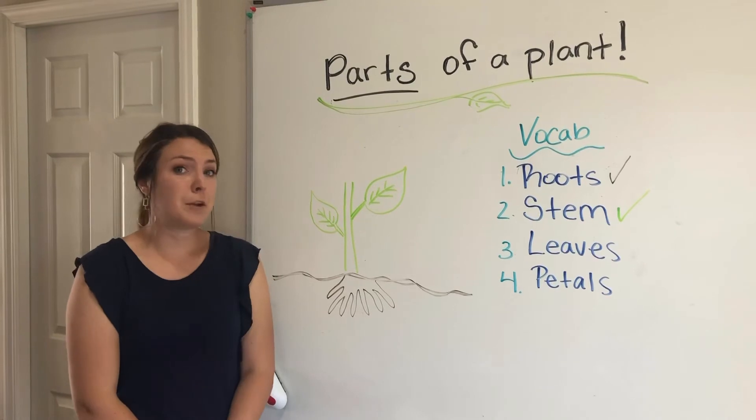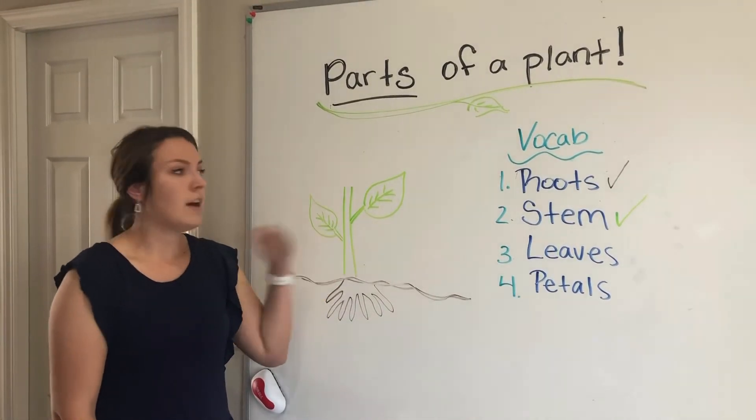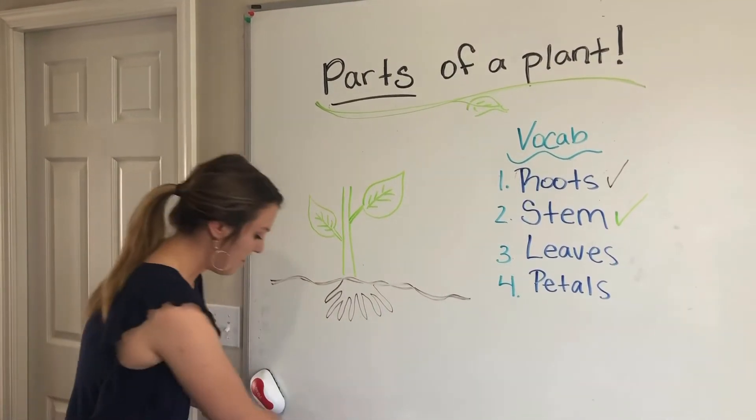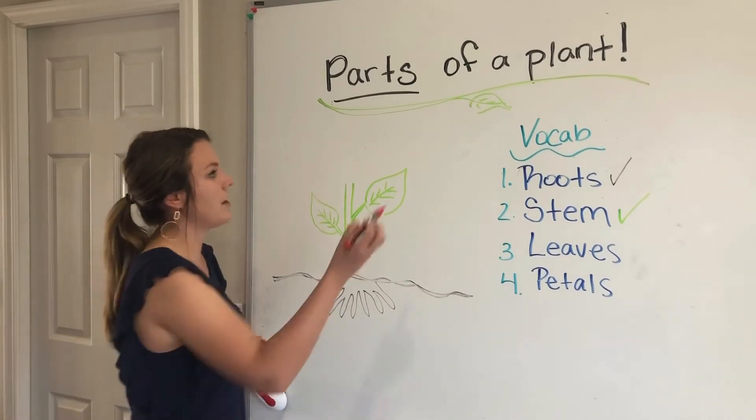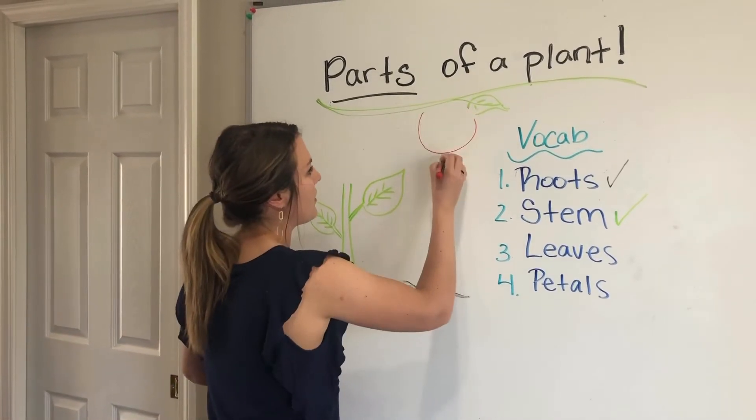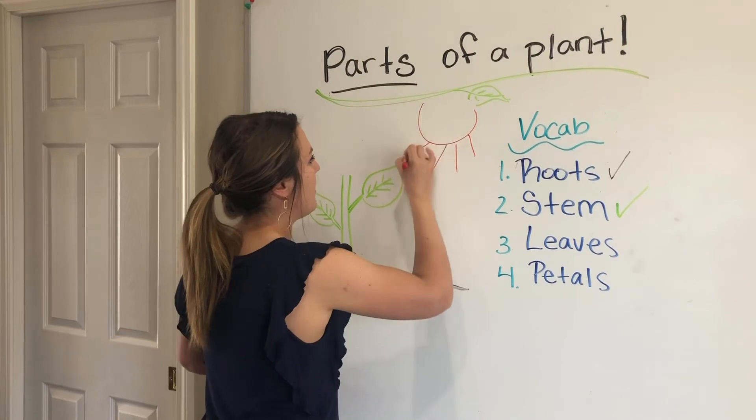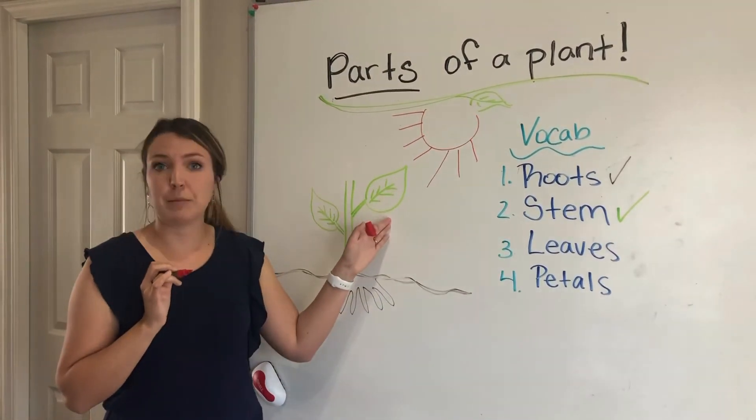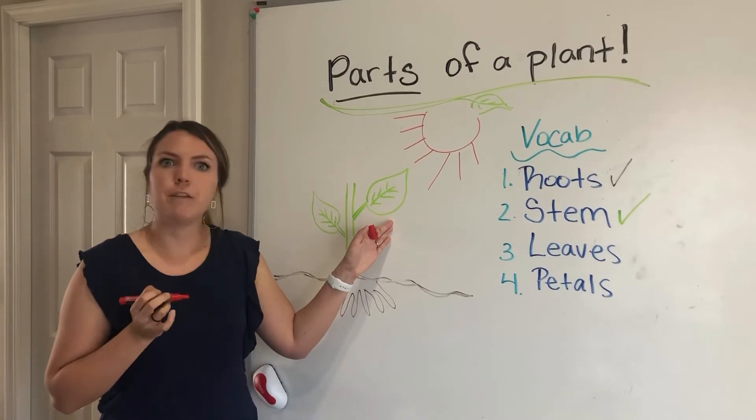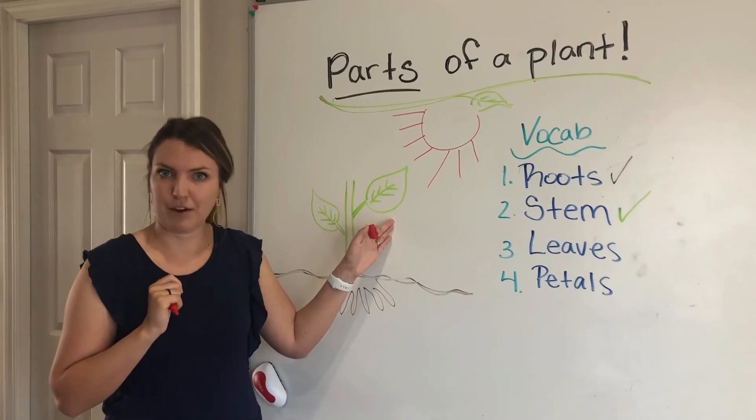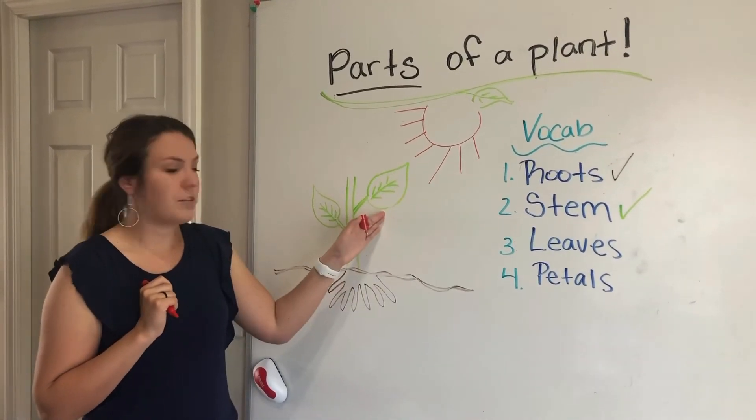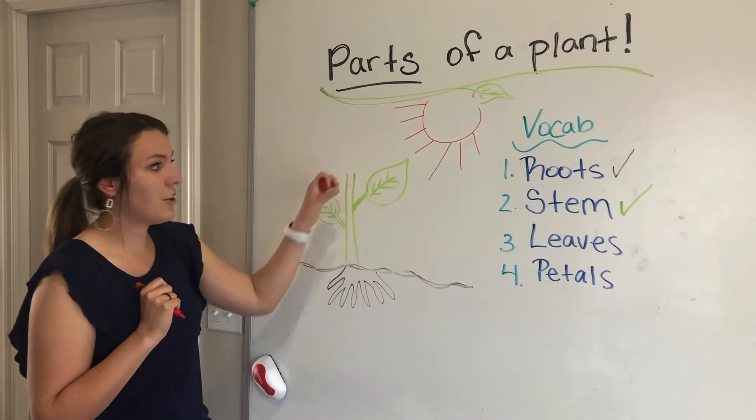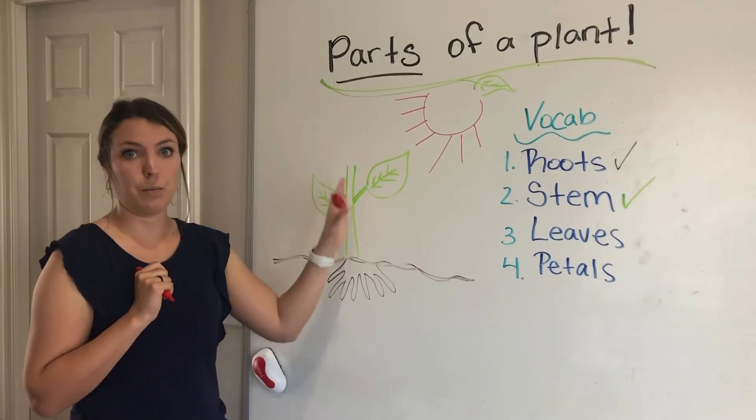This one might be new to some of you. This is one that not all first graders know. Leaves have a very important job because they stand out so they can catch all the great things that come from the sun that feed the plant. You're gonna learn a bit about this process a little bit in first grade further. It's called photosynthesis. That's a big word, huh? So they're working on photosynthesis, trying to take sunlight to turn it into food for the whole plant.